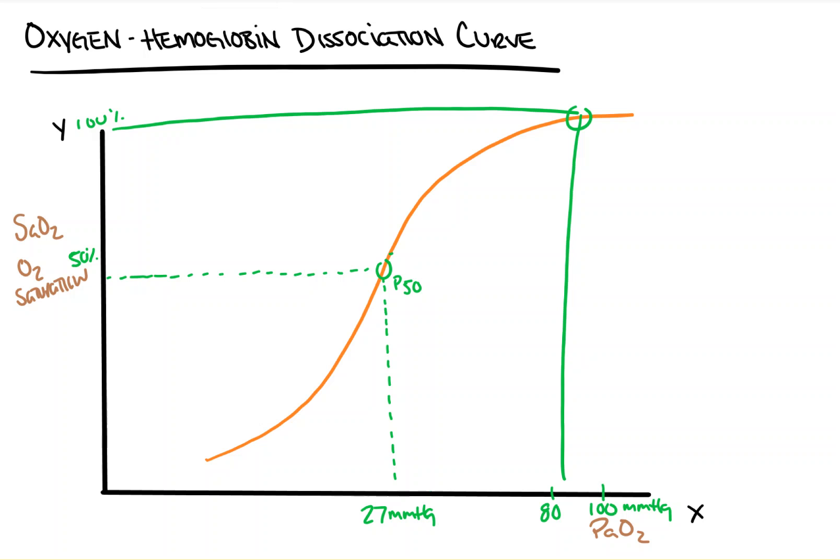If we shift the curve to the right, I'll go ahead and draw that here like this in red. This is called a right shift. This implies that hemoglobin is not binding oxygen very tightly, and this can be demonstrated by the fact that it takes an even higher partial pressure of oxygen.